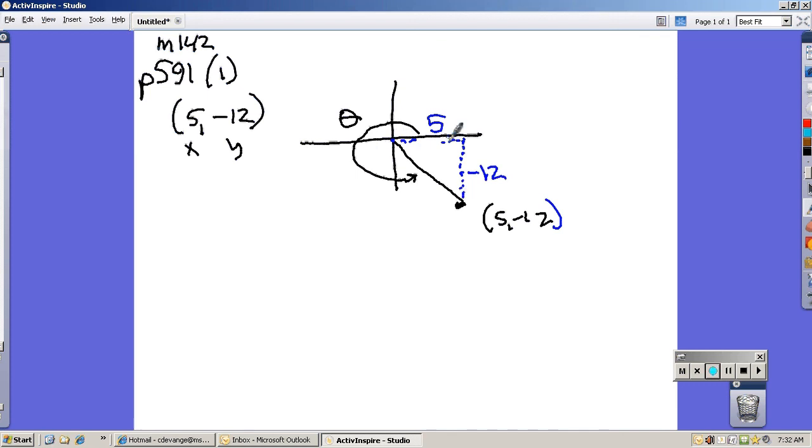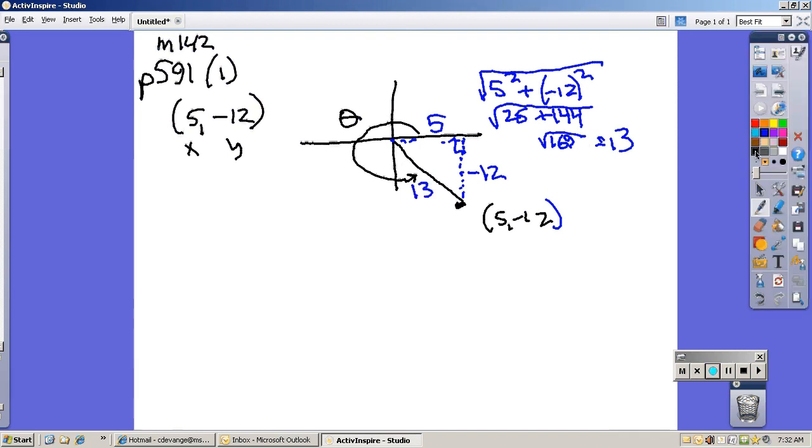Now you can use Pythagorean theorem for that since this is a right triangle. So I can go 5 squared plus (-12) squared and I'll end up square rooting it. 5 squared is 25, (-12) squared is 144, that's 169. Square root of that, I get 13. So this radius is 13 long.